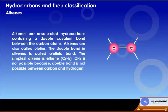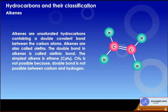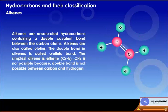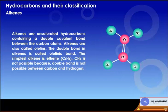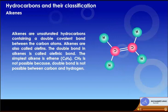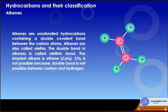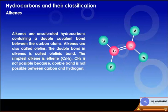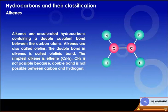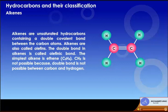Alkenes are unsaturated hydrocarbons containing a double covalent bond between carbon atoms, also called olefins. The double bond in alkenes is called an olefinic bond. The simplest alkene is ethene, C2H4. CH2 is not possible because a double bond is not possible between carbon and hydrogen. In higher alkenes, the number and position of double bonds may vary. Alkenes are represented by the general formula CnH2n, where n is 2, 3, 4, etc. All alkenes end in '-ene'.